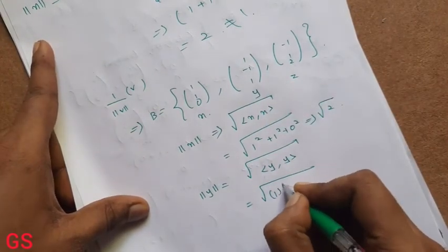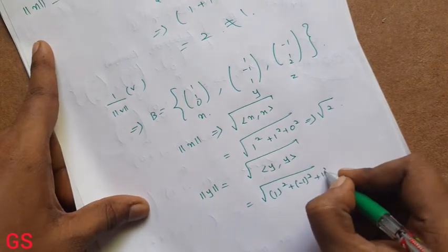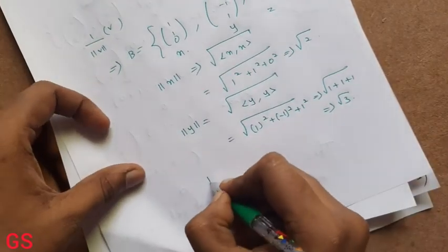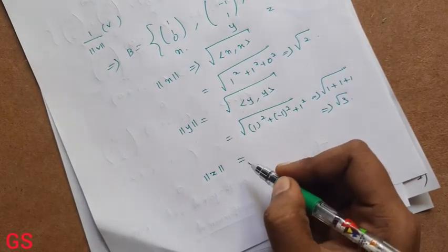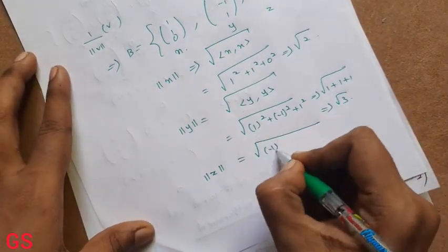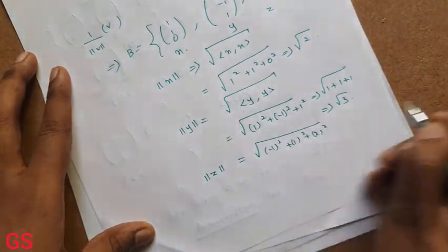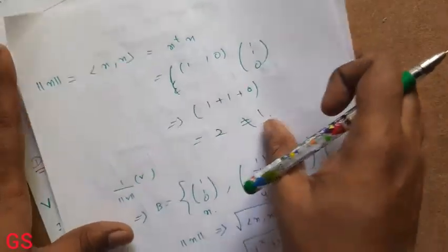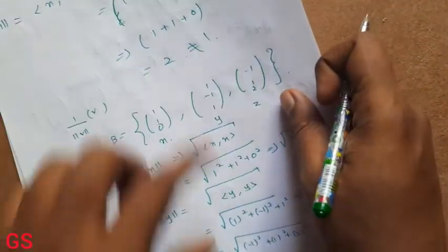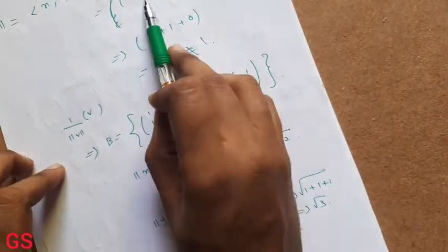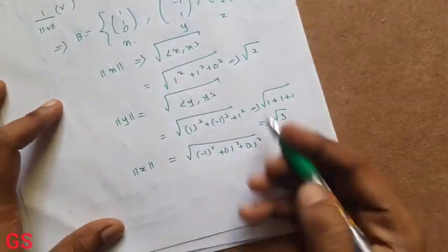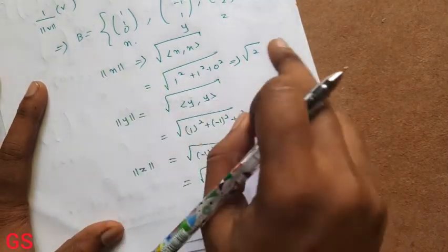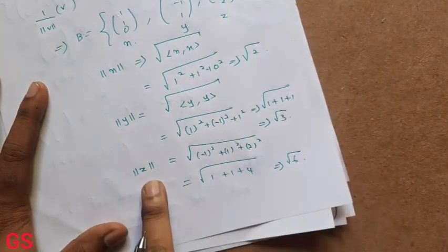Norm of X is equal to root of X·X — so root of 1 squared plus 1 squared plus 0 squared — root of 2. Norm of Y is equal to root of Y·Y — root of 1 squared plus (-1) squared plus 1 squared — root of 1 plus 1 plus 1 = root 3. Norm of Z: root of 1 plus 1 plus 4 — so this is root 6. So norm of X = root 2, norm of Y = root 3, norm of Z = root 6.